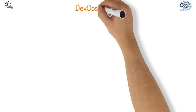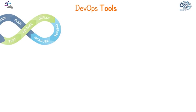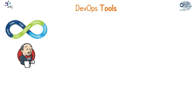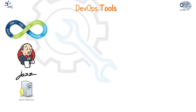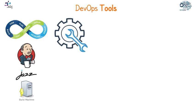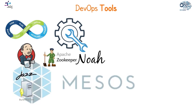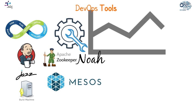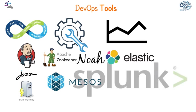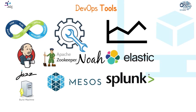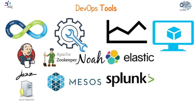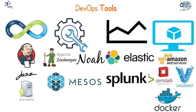DevOps tools include: release tools like Jenkins and the JAZZ Build Engine; configuration management tools like Zookeeper, Chef, and Mesos; monitoring tools like Elasticsearch and Splunk; and virtualization and containerization tools such as AWS, OpenStack, Vagrant, and Docker.